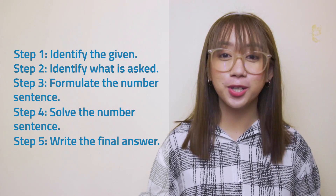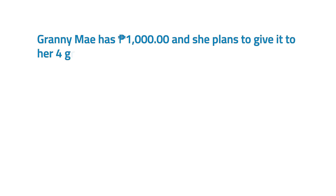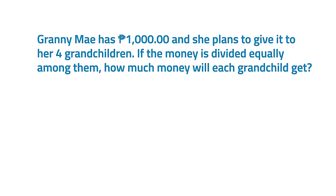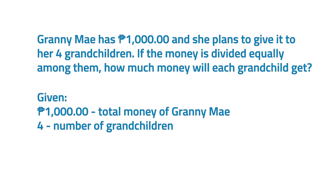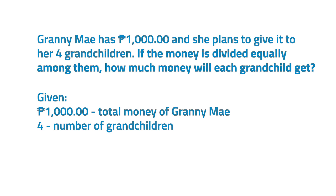Let's apply these steps in solving the first word problem. Granny May has 1,000 pesos and she plans to give it to her four grandchildren. If the money is divided equally among them, how much money will each grandchild get? For step 1, the given are: Granny May has 1,000 pesos and she has four grandchildren. For step 2, we are asked to find the amount of money each grandchild will get. The keywords are 'divided' and 'each,' which tell us to use division.